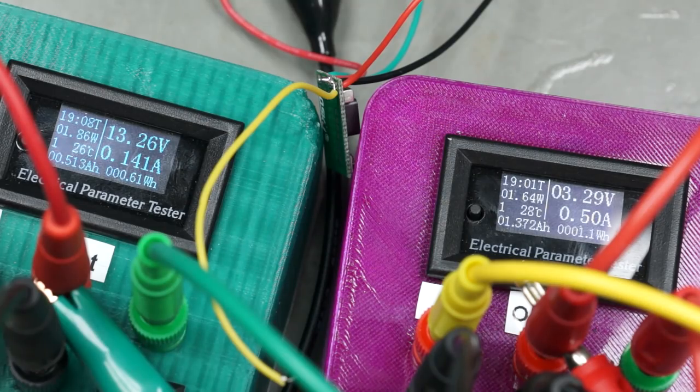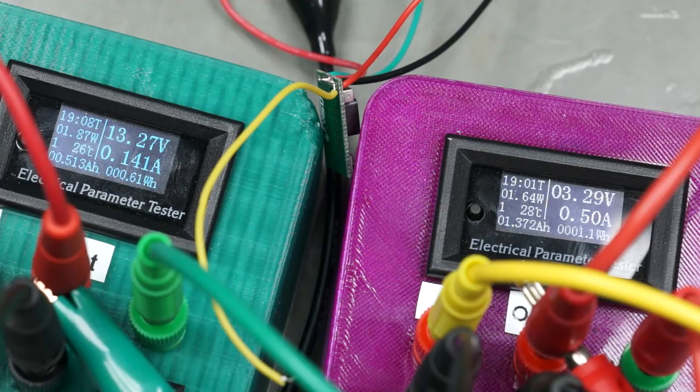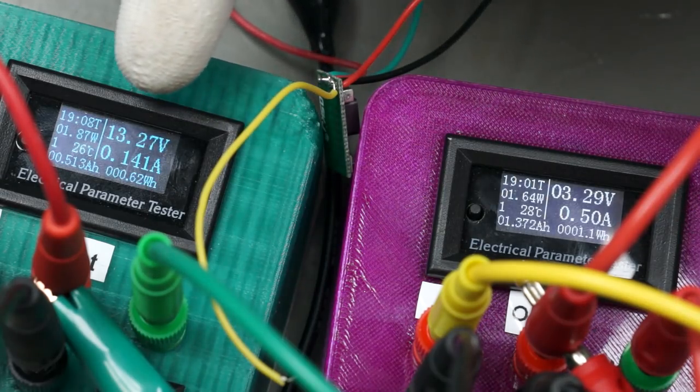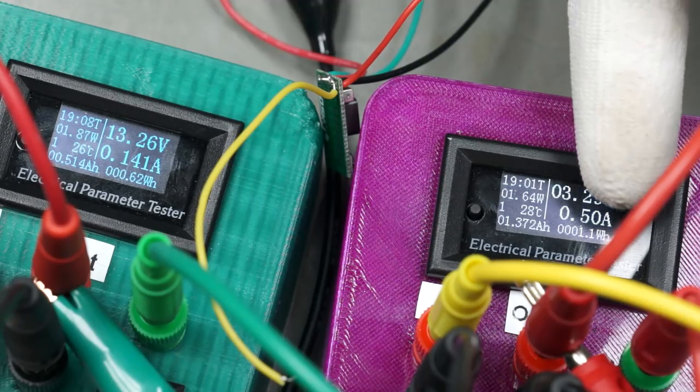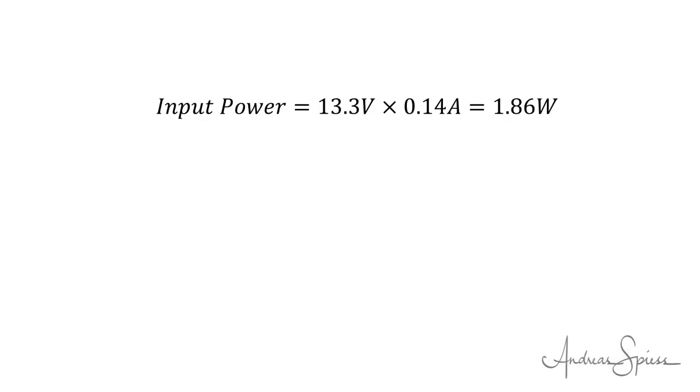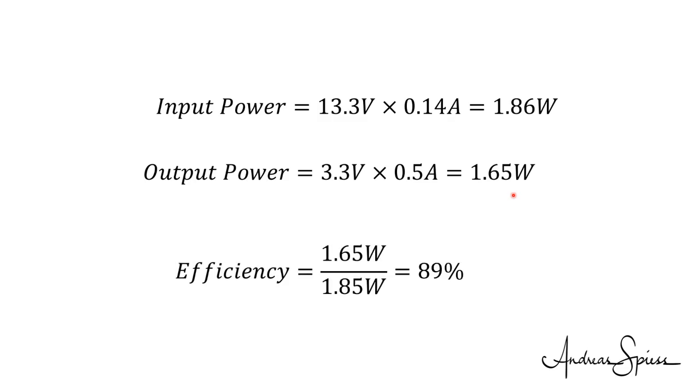Let's calculate the power dissipation. The voltage drop is, as before, 10V. But what about the current? With linear regulators, the input and the output currents were the same. Here, the input current is much lower than the output current. So, we cannot use the same calculation as before. We have to calculate the input power as 1.86W and the output power as 1.65W. So, the loss is only 0.2W. This is the reason for the coolness of this device. And the efficiency is 89%. Compared with the 25% from before, not bad.